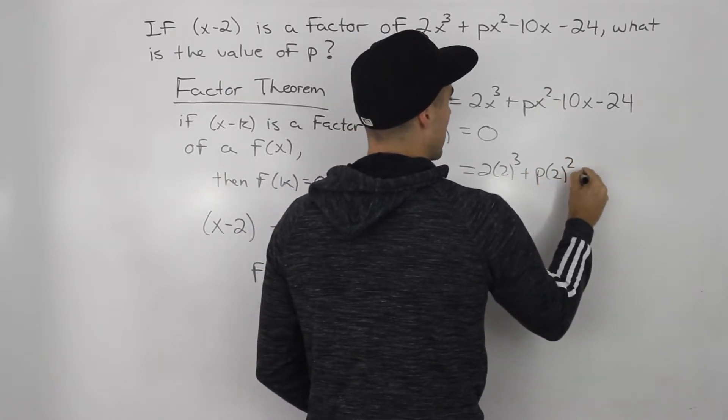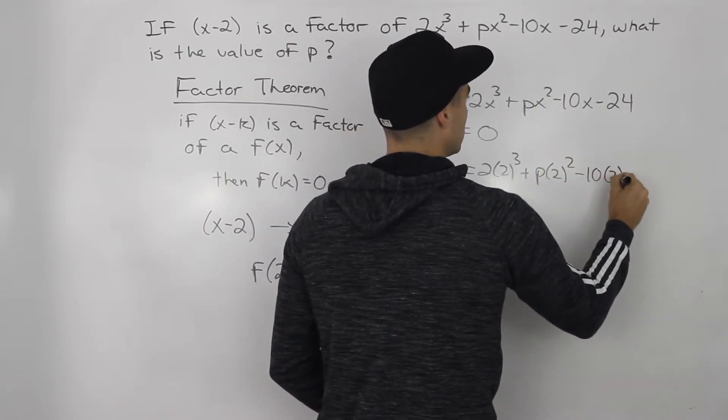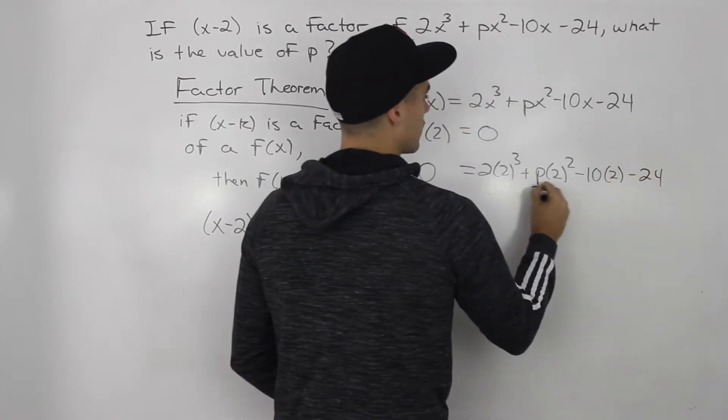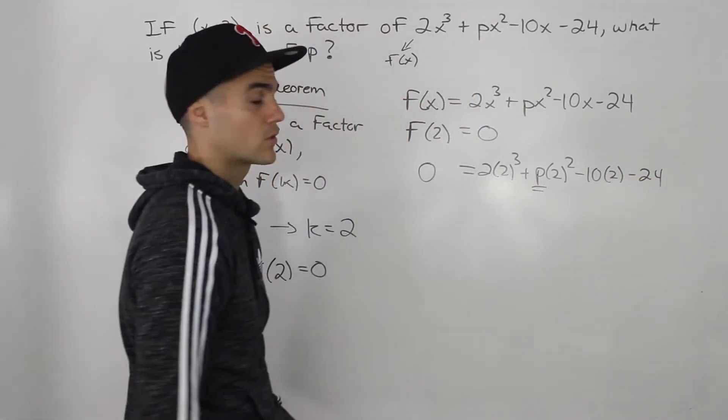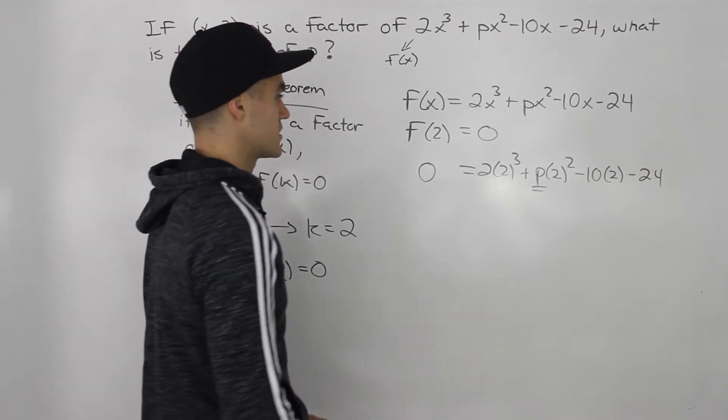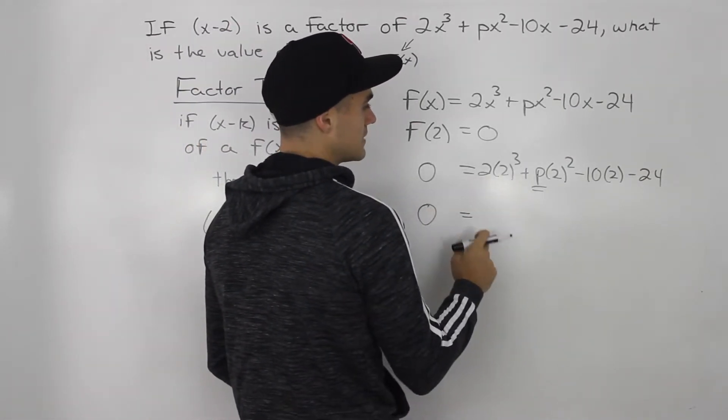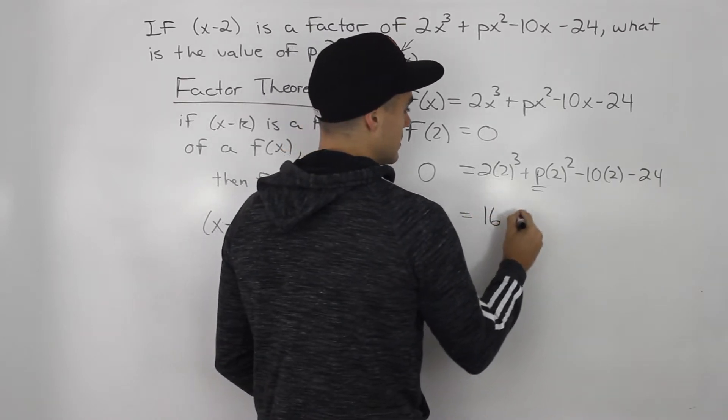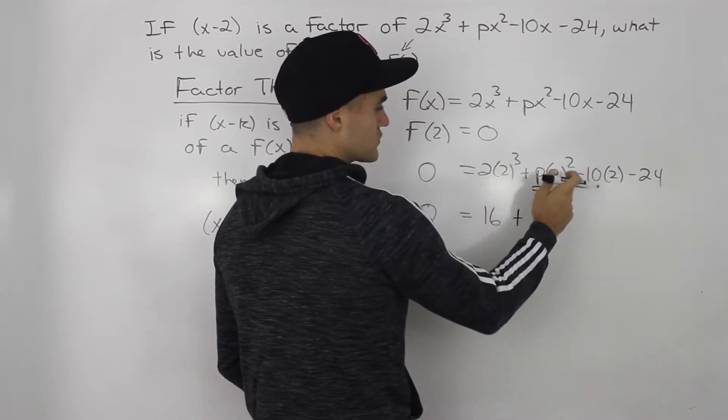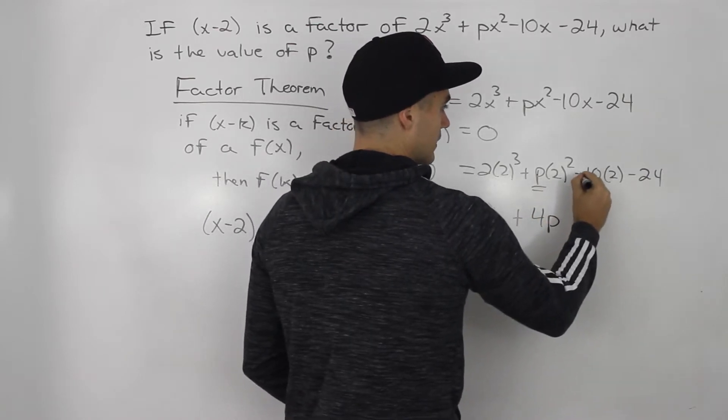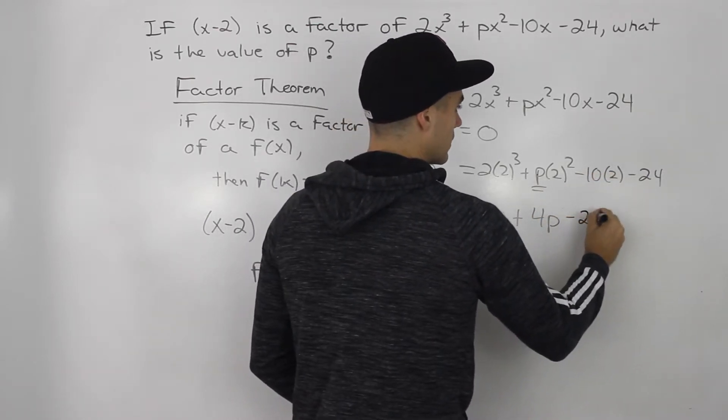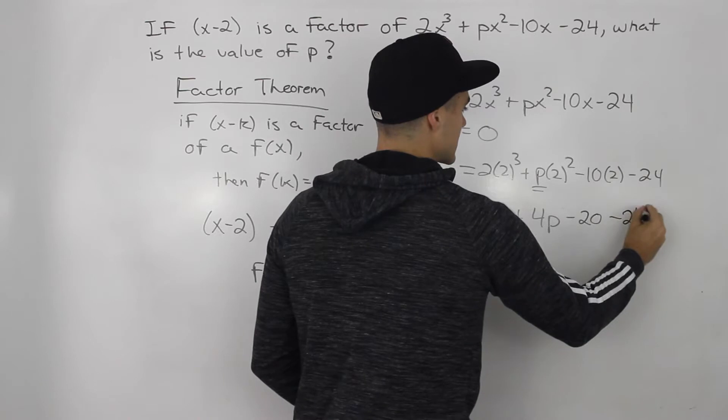And when we do that, notice how we are only left now with this variable p to solve for. The rest are just numbers, so we got 0 equals 2 to the power of 3 is 8 times 2 is 16 plus 2 to the power of 2 is 4 times p is 4p. Negative 10 times 2 is negative 20, and then negative 24 stays as is.